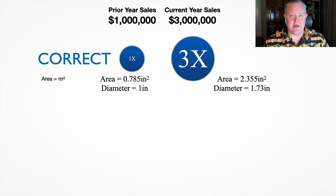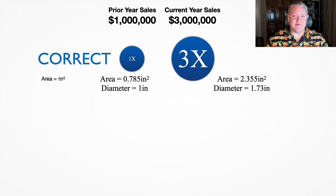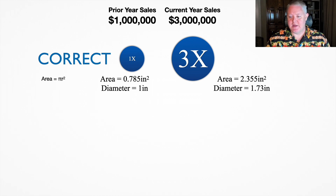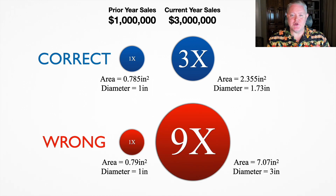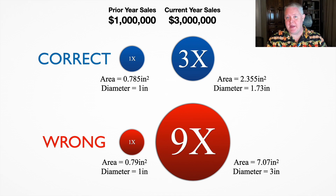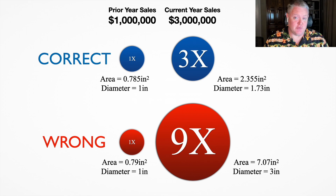What happens often is that designers will not triple the area of the circle — they will actually triple the diameter of the circle. So if you were to triple the diameter of that second circle for the current year sales, you would have to triple the width and the height of that circle object, and you end up with a circle that's actually nine times larger. Now you've got good data on the page, but your circles don't actually visually represent the data that you're talking about. It's actually wrong.